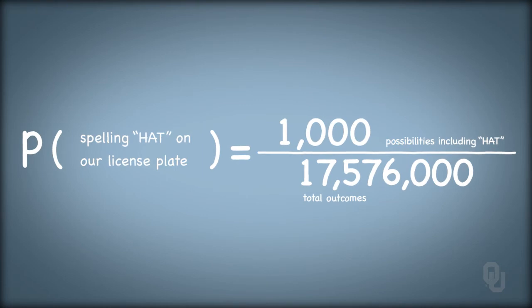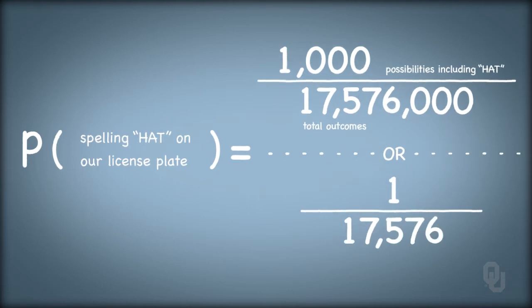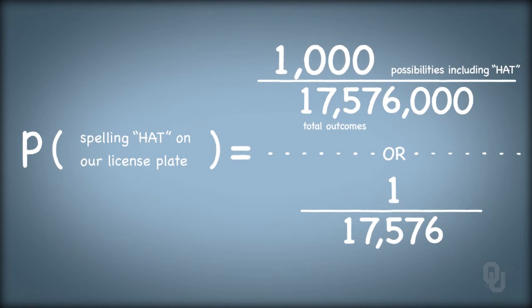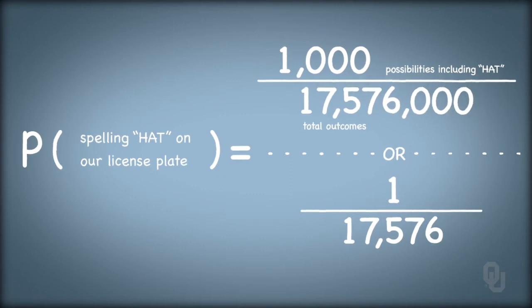The probability of event A is 1,000 divided by 17,576,000, or 1 out of 17,576. Again, we know the number of ways for our particular event A to occur and we know the total possible events that can occur. Event A is described with the classical view of probability.